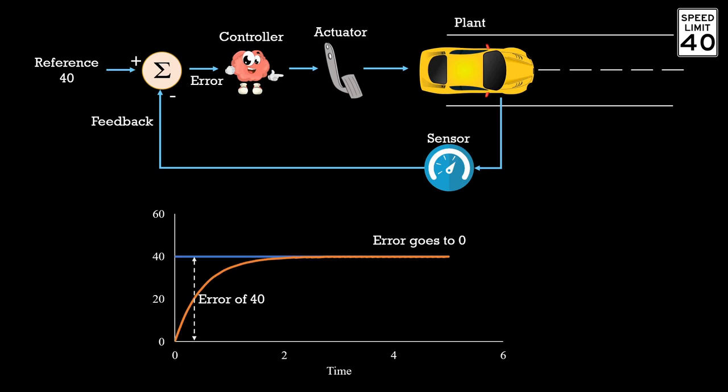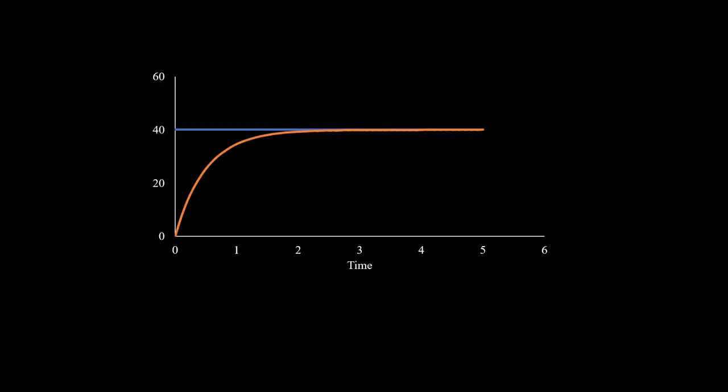But there is a problem. Human beings are not always accurate and efficient in doing this job. Let us take this case. An aggressive rider might press on the accelerator pedal too much at the start. This might lead to a very fast increase in speed and there is a chance that the speed might overshoot. The error becomes negative and the brain needs to then correct for this overshoot by decreasing the pedal angle.